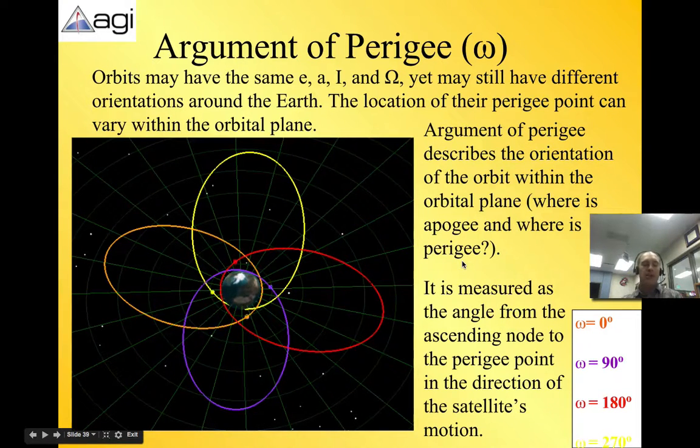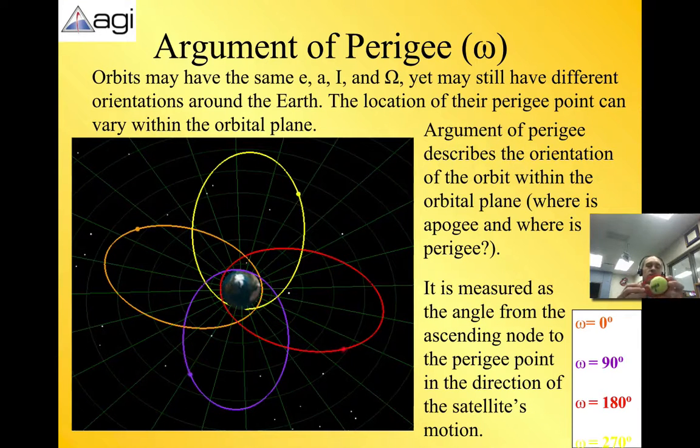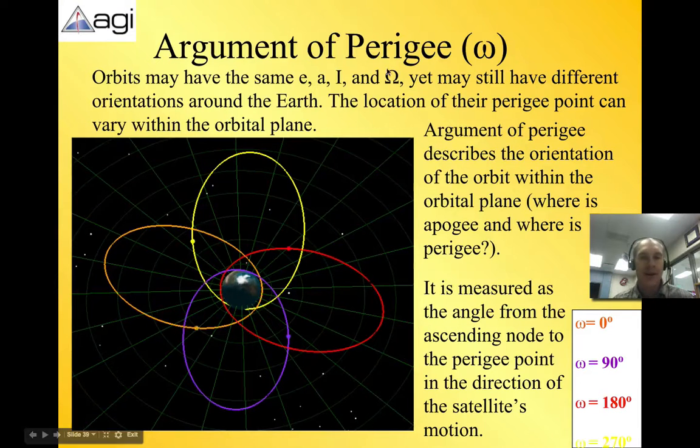Where is the apogee, the place that is closest, and the perigee, the place that is farthest away? If we just change the argument of perigee over to here, then the apogee and perigee you can see are in different places, even though it has all of the same other conditions here. So it is measured as the angle from the ascending node to the perigee point in the direction of the satellite's motion.